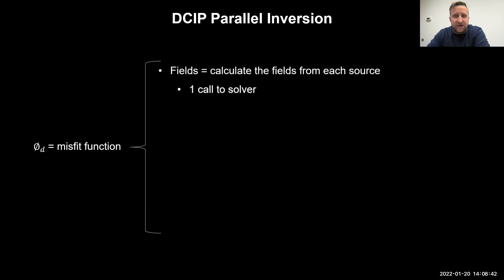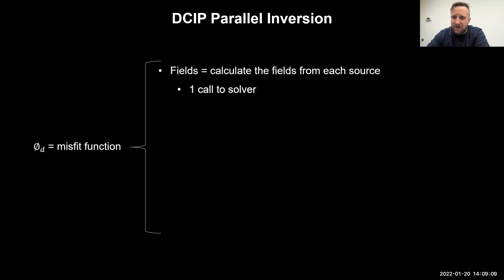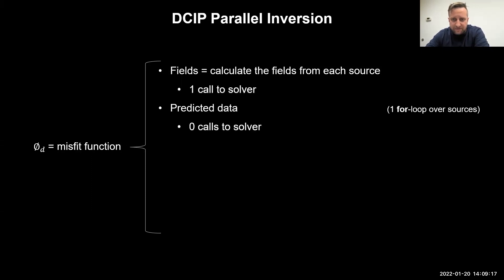Why is the misfit function so computationally heavy? The first part is calculating the fields — we need to know how to calculate the fields with a given model. This involves one call to the solver, done over all sources at once by handing it multiple right-hand sides. It's efficient in a sense, but it is one of the heavier sides of the computation. After we know the fields, we can calculate the predicted data; this does have one for loop but doesn't require solves. Each subsequent operation will also need the fields, making the fields the primary computational bottleneck.